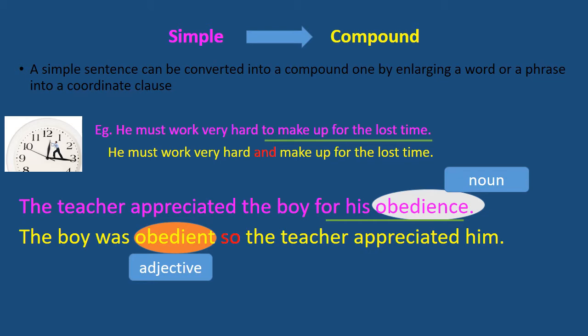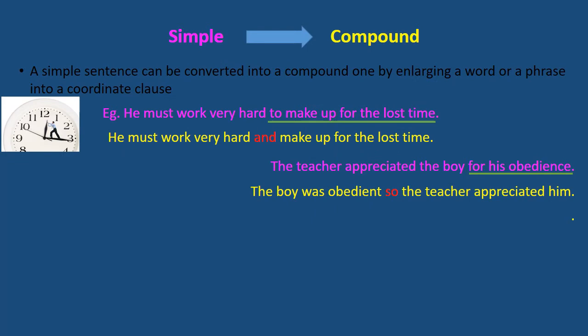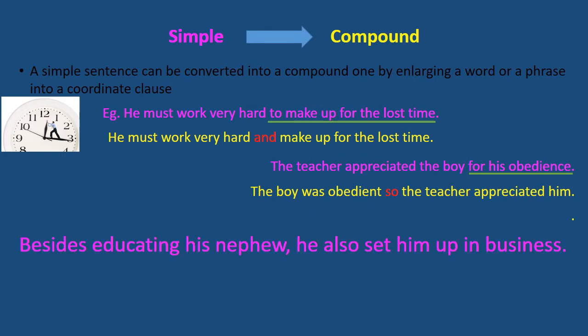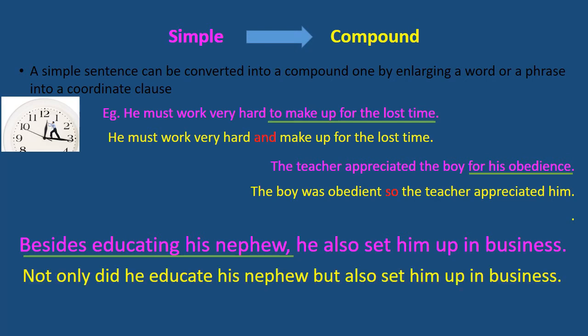Remember FANBOYS — the coordinating conjunctions. Next example: 'Besides educating his nephew, he also set him up in business.' The phrase 'besides educating his nephew' contains 'educating,' which is a non-finite verb. We change the conjunction: 'Not only did he educate his nephew, but also set him up in business.'